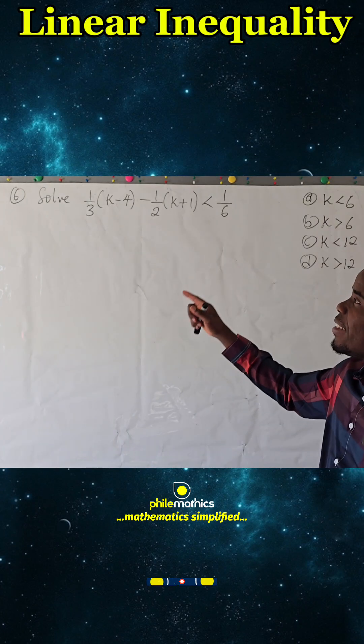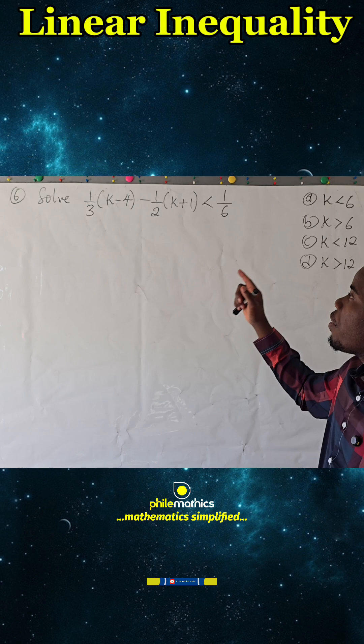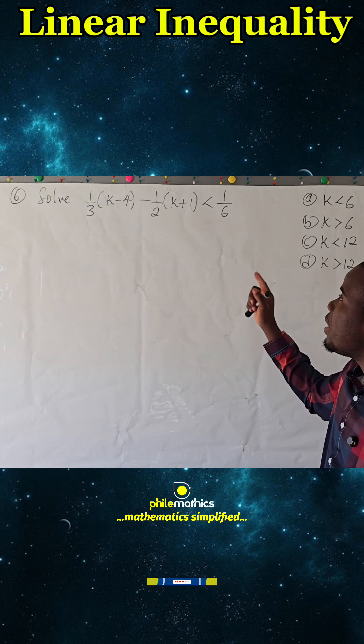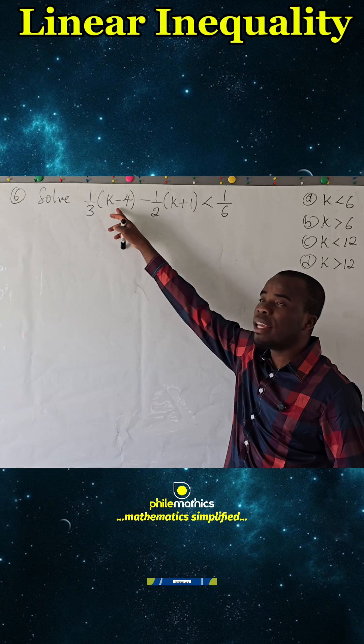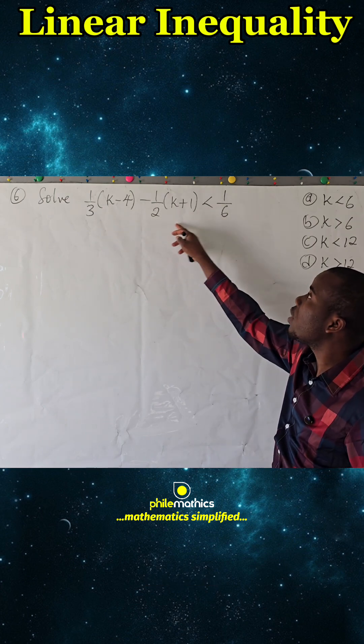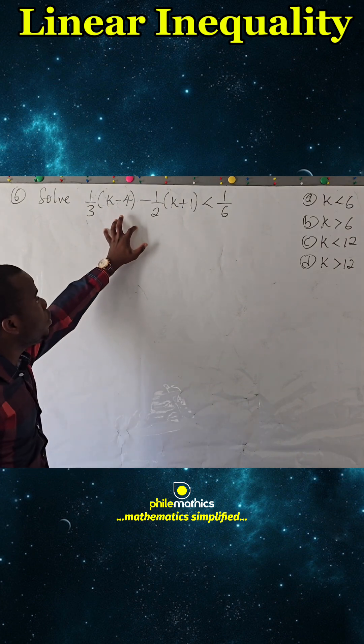Solve 1/3(k-4) - 1/2(k+1) < 1/6. We are looking for the value of k that satisfies this inequality. What we can easily do here is find the LCM and multiply through.